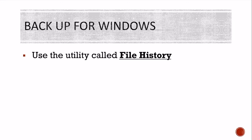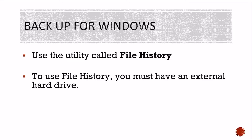Backup for Windows: on a Windows machine, there is a utility called File History. In order to use File History, you must have an external hard drive. You hook your hard drive up and then use it — it takes you step by step through what File History is.